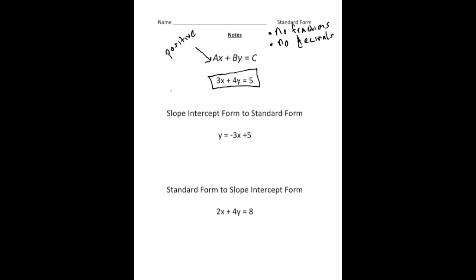Now that you know about standard form, there will be times when you need to transform an equation from slope intercept form to standard form. This equation is currently written in y equals mx plus b format, where this is the y-intercept and this is the slope. But we want it in ax plus by equals c format. To do that, I'm going to add three x to both sides. So now we have three x plus y equals five, and now it's written in standard form, where the A value is three, the B value is one, and the C value is five.